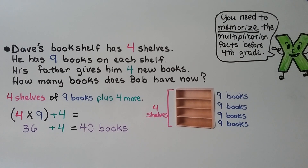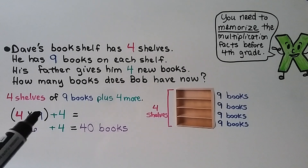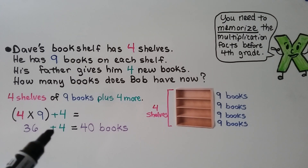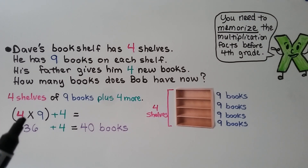Dave's bookshelf has four shelves. He has nine books on each shelf. His father gives him four new books, so how many books does Dave have now? He has four shelves of nine books, plus four more — that's four times nine, plus four. We do four times nine first since it's in the parentheses — that's equal to 36, plus four more, is equal to 40 books. So Dave now has 40 books. Because he had four groups of nine, we did that multiplication first, then added the four new books to that product.